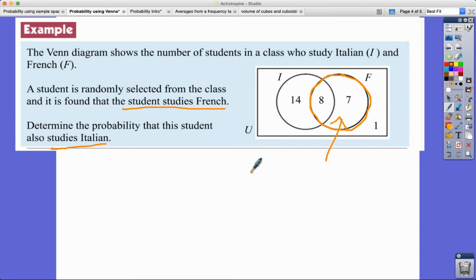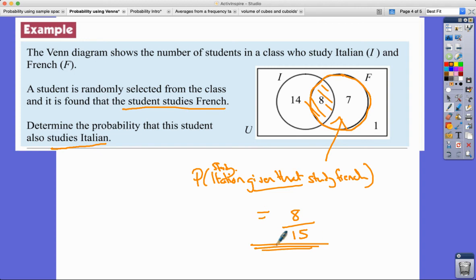So what we've got to think about here is the probability of studying Italian given that they study French. So how many people study French? 7 plus 8 it's 15 there. And of those 15 people, how many people also do Italian? There they are - 8. So 8/15. So hopefully if you read that question very carefully you can arrive at that answer as well.